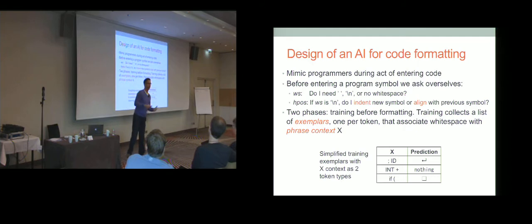As with any machine learning problem, we have a training process and formatting. The act of training is a matter of scanning through the entire corpus, through each file and looking at the white space in between every two adjacent tokens. And you produce a list of exemplars, which is basically a feature vector that indicates the context, which we'll see a little bit about the features in a second. What context is that token? And what white space is found at that position?